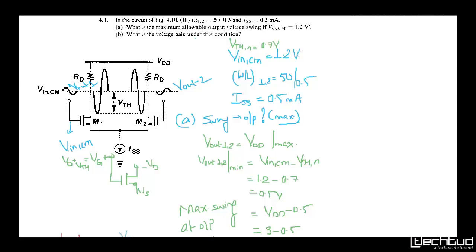If the input common mode is 1.2V, they ask what is the maximum allowable output voltage swing. Remember, for amplification we always try to keep all the amplifiers in the saturation condition. These two transistors can go to sub-threshold, but the bottom transistor — acting as the current source — has to be in saturation. If it goes to linear region, it will not act like a current source. For intuitive purposes we have drawn a direct current source, but in the actual circuit this will be replaced by a MOS transistor.